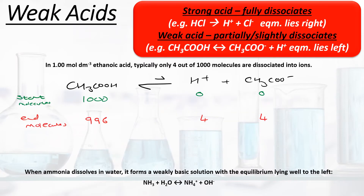In the first video of this series we looked at the definition of a strong acid and of a weak acid. We said that a strong acid was an acid which fully dissociates, for example HCl fully dissociating into H+ and Cl- ions in solution. Technically this assumption isn't 100% correct — even a really strong acid like HCl doesn't 100% dissociate — but for the purposes of an assumption we can say that it does. So the equilibrium lies completely to the right.